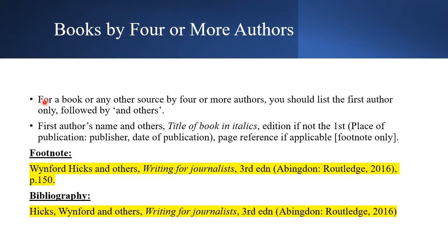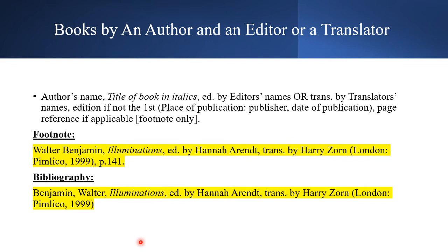For a book by four or more authors, list only the first author followed by 'and others'. The formula is: First Author Name and others, Title of Book, edition details, (Place: Publisher, Year), pp. [page range]. In the bibliography, just invert the first author's name and 'and others' remains the same, with no full stop at the end.